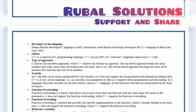Type of approach. C follows a top-down approach while C++ follows a bottom-up approach. The top-down approach breaks the main modules into tasks, and these tasks are broken into sub-tasks and so on. The bottom-up approach develops the lower-level modules first and then the next-level modules.